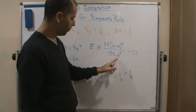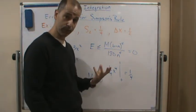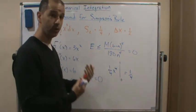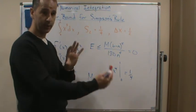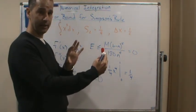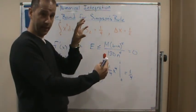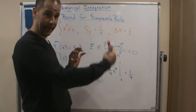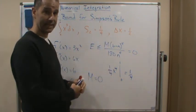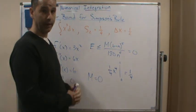you can then go backwards and find the number of subintervals that I would need to use to make sure that the difference between the exact answer and the approximated answer would be less than what you want.